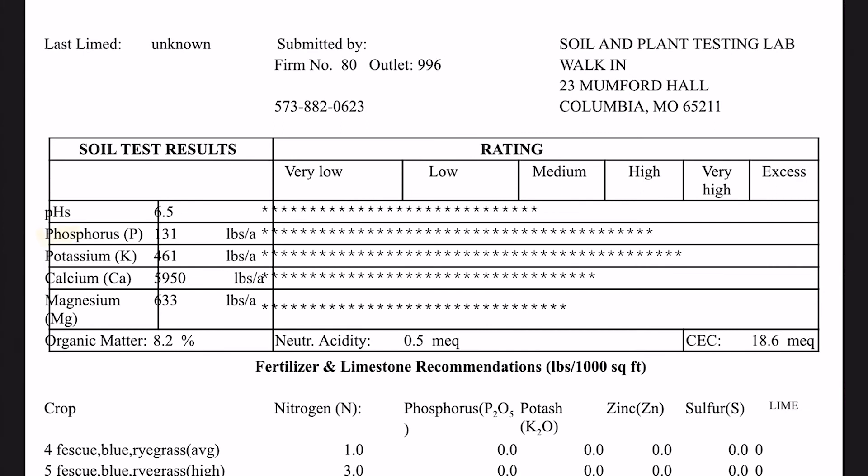Next, we'll look at the phosphorus level, which is designated with the letter P. Phosphorus is important for root growth and plant development. This lawn has more than adequate phosphorus for this important soil function.